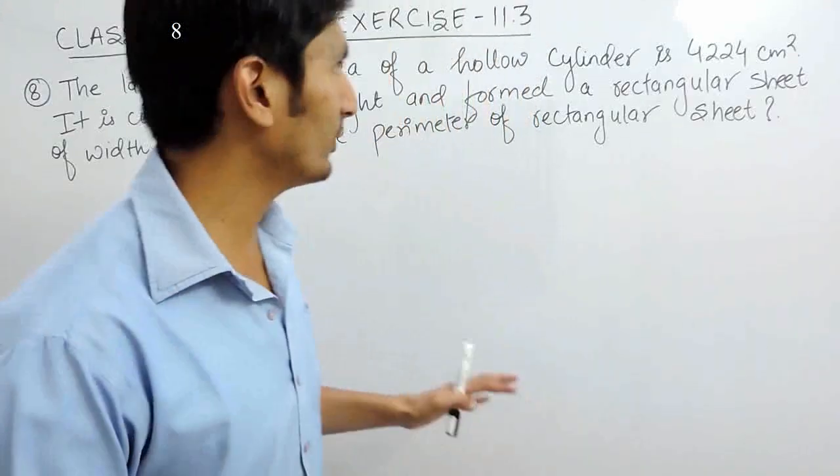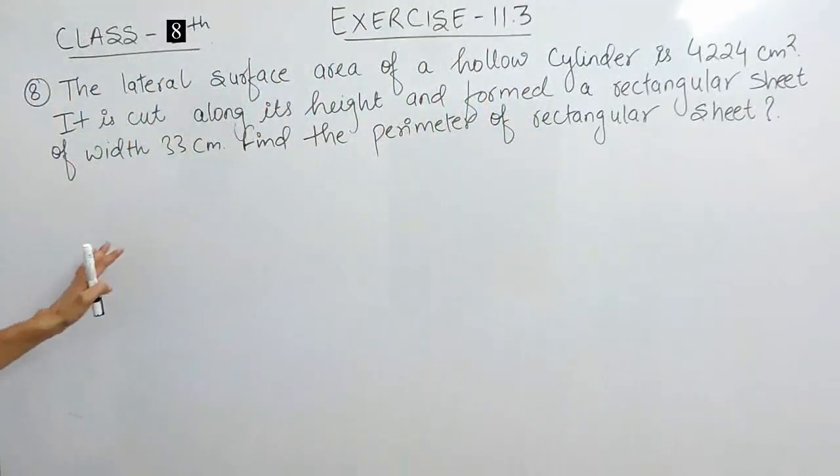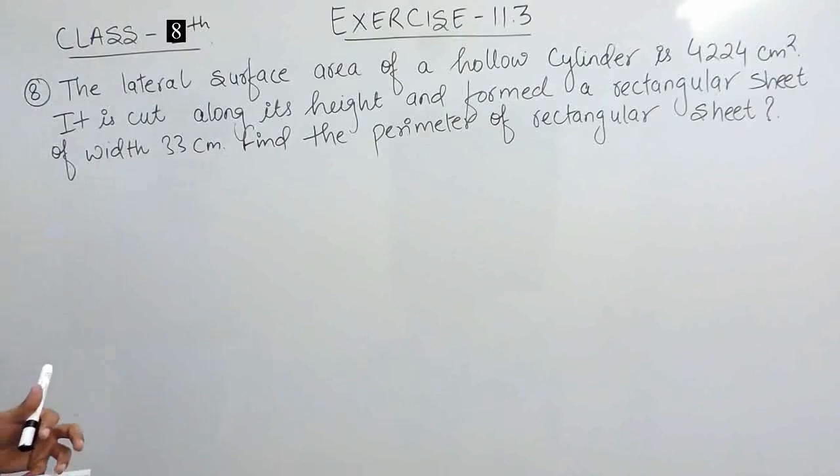Hello everyone, in this video we are going to solve question number 8 of exercise 11.3. The question says: the lateral surface area of a hollow cylinder is 4224 cm². It is cut along its height and forms a rectangular sheet of width 33 cm. You have to find the perimeter of the rectangular sheet.